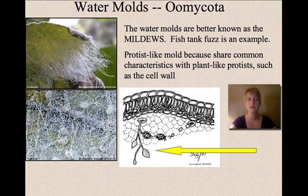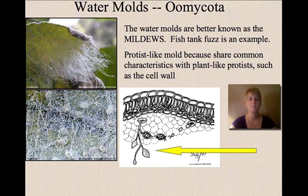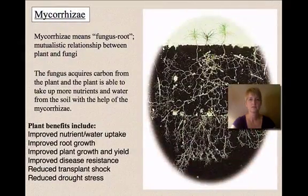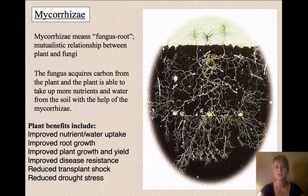There are also water molds, better known as mildew. These are somewhat protist-like because they share characteristics with plants, including having a cell wall, but they are classified as molds.